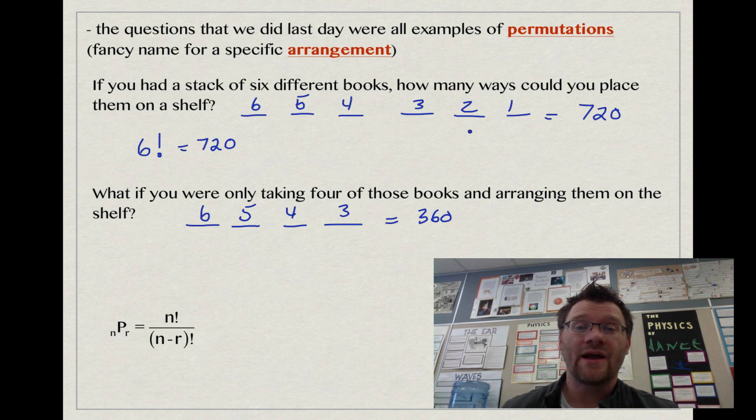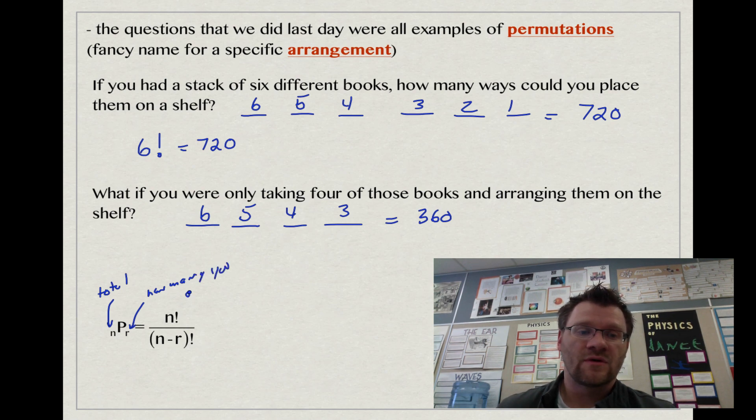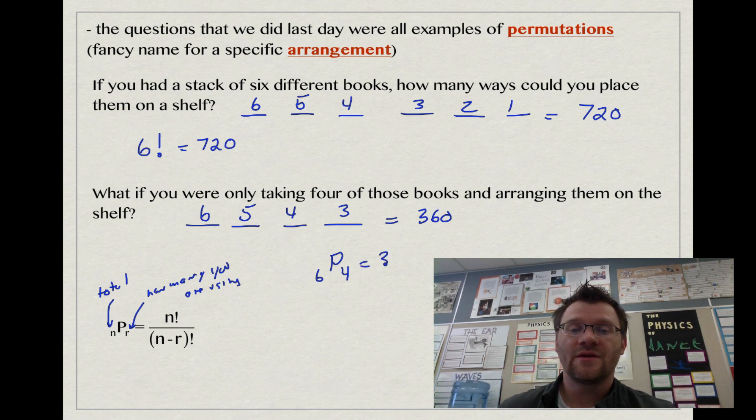If we had 100 books, we wouldn't want to multiply 100 by 99 by 98 all the way down to one. You would just put 100 factorial into your calculator. This nPr button, this permutation button, n is how many total options you have, and r is just talking about how many you're actually taking, how many you're using. For this example, that would be 6P4. If you plug that into your calculator, you'll find that to be 360.